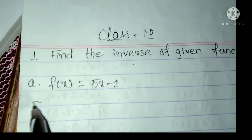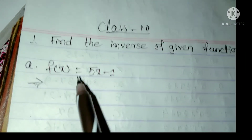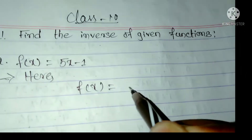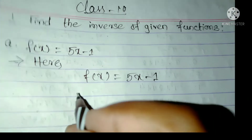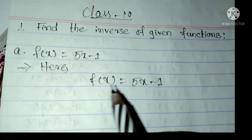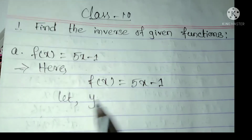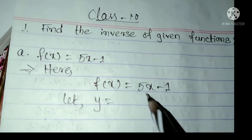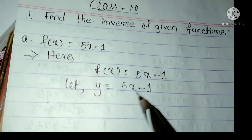First, we have the question. f(x) is equal to 5x minus 1. We will find the inverse function. The first step: let y equal to the given function. So, let y equal to 5x minus 1.